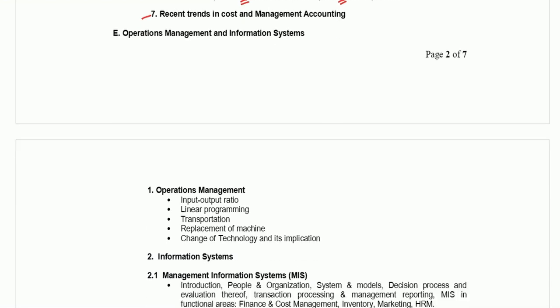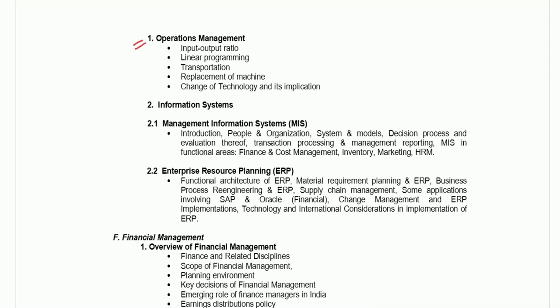The next subject is operations management and information systems. Under operations management they have mentioned input ratio, linear programming, transportation, replacement of machine, and change of technology. Linear programming and transportation are from CA final quantitative techniques syllabus. From these topics they will mostly ask theoretical questions. Under information systems, the two parts are management information systems (MIS) and ERP. You just need to understand what ERP and MIS are and how they work — basic theoretical knowledge is sufficient.